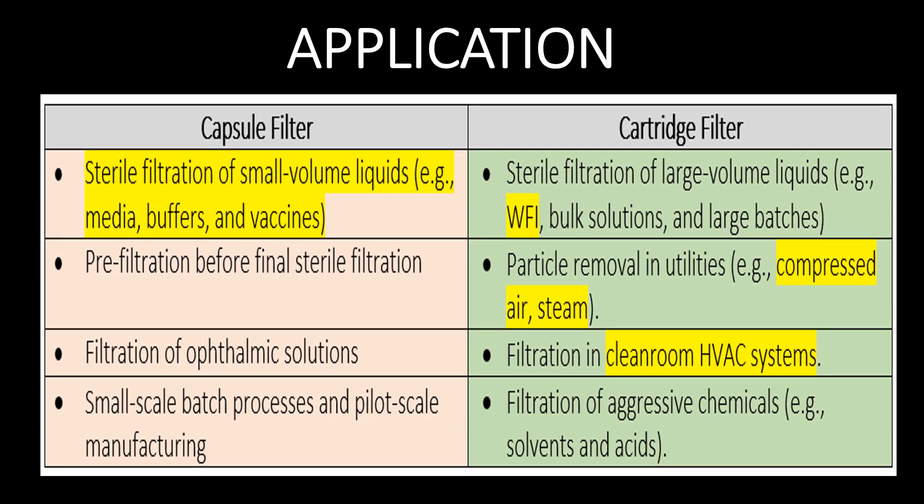Now, about some application differences between capsule filters and cartridge filters. Capsule filters are recommended for sterile filtration of small-volume liquids, for example media, buffers, and waxes. Whereas cartridge filters are mostly recommended for sterile filtration of large-volume liquids, for example WFI, bulk solutions, and large batches. Cartridge filters are also used for particle removal in utilities like compressed air and steam, and they are also recommended for filtration in clean room HVAC systems.